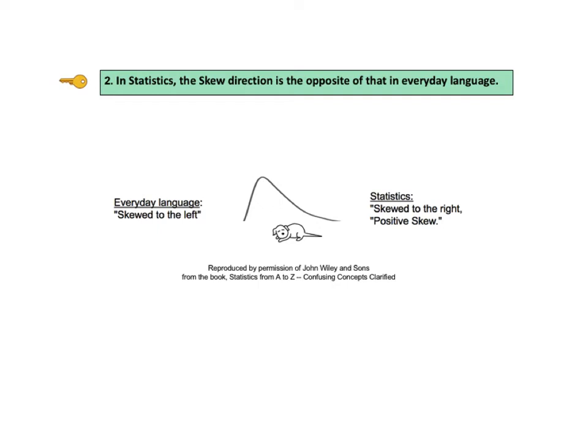But in statistics, we say it is skewed to the right. And since positive numbers on a graph are to the right, we say it is positively skewed. The value of its skewness measurement would be positive.